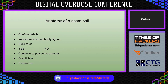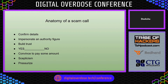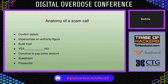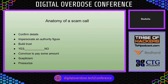This slide covers the anatomy of a scam call. In today's social media era, it is easy to get primary information about a person. The person calling you could confirm your details by doing just a small footprinting exercise. Then they impersonate an authority figure, claiming they're from your bank, a reputed company, a job portal — it could be anything. Then they build trust by talking to you and giving you more information about why they called.